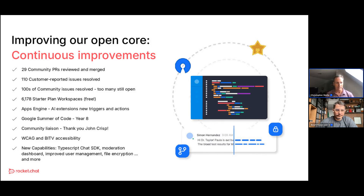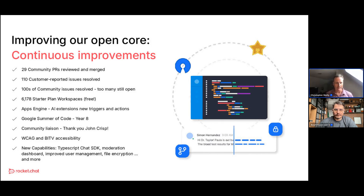We had 29 community PRs contributed, reviewed, and merged. The number is down slightly from last year for a couple of reasons: the codebase is expanding, making it harder to merge contributions that don't match our design patterns and code standards. Also, we're no longer taking documentation contributions to standardize our docs, though documentation feedback remains very welcome.